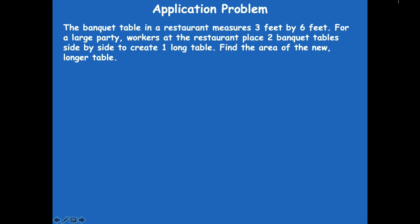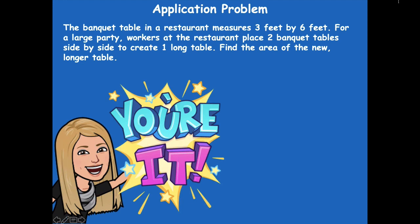So we're going to start with our application problem. It says: the banquet table in a restaurant measures three feet by six feet. For a large party, workers at the restaurant place two banquet tables side by side to create one long table. Find the area of the new longer table. Pause the video and find the area of the longer table. Draw a quick diagram or picture if that helps you, just like I'm going to do when I model the problem. Then solve using multiplication equations for area, and click play when you're ready to go over it together.